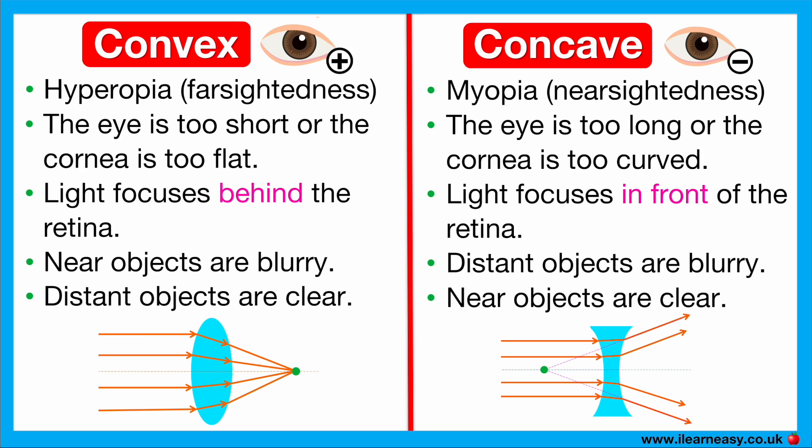A concave lens is thinner in the centre and thicker at the edges. It diverges light rays, meaning it spreads them out. As a result, the lens moves the focal point backwards so it lands on the retina instead of in front of it. Without correction, light focuses in front of the retina, so distant objects appear blurry.